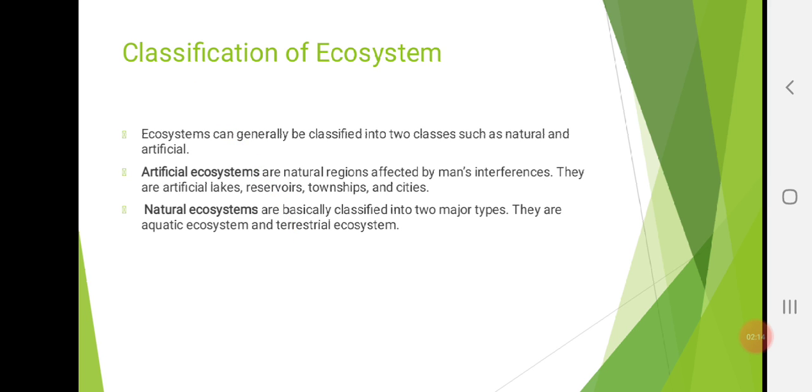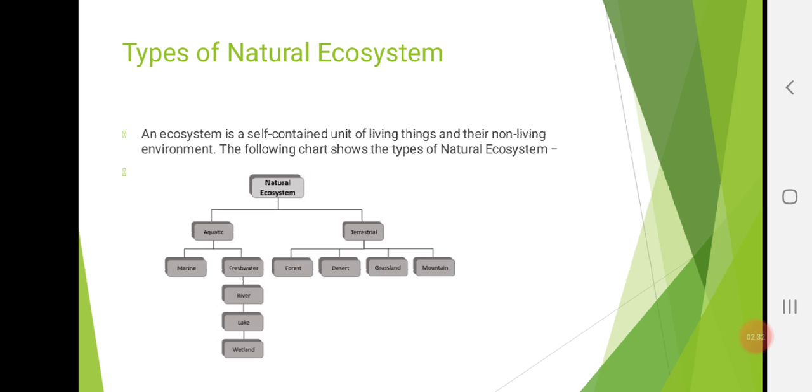Then, we have seen a classification of ecosystem. What is the classification? Actually, there are two types of classification. Natural and artificial. We are not going to focus on artificial. Let's see what are the natural ecosystems. So, you can see one flowchart here. Natural ecosystem. It has two parts. Aquatic and terrestrial. Terrestrial means they include grassland, desert, forest, mountains, etc. And, aquatic contains marine and fresh water.